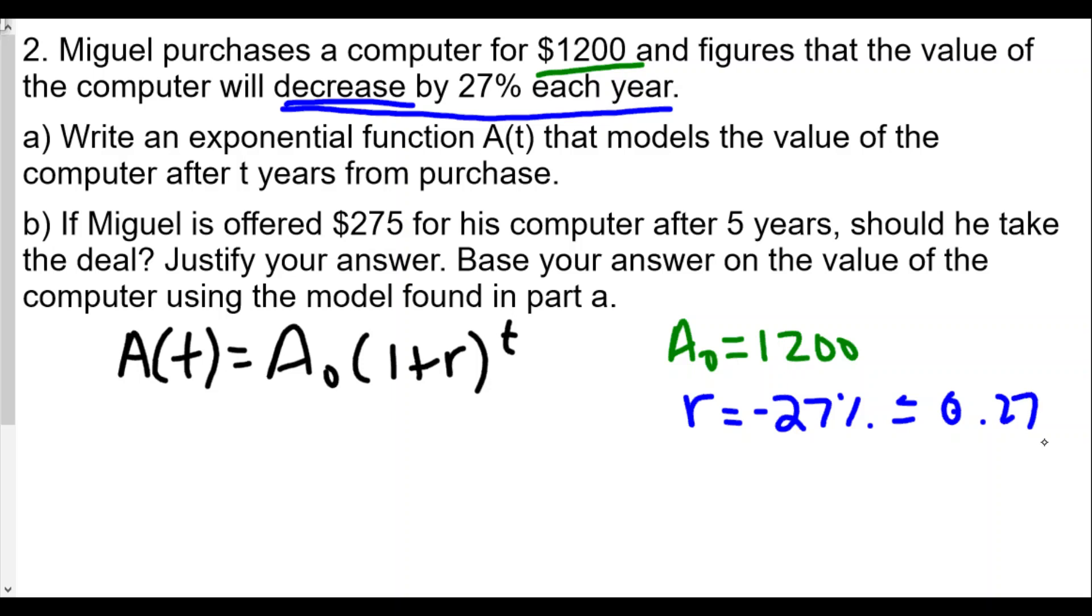We plug this back into our formula: A(t) = 1200 times (1 minus 0.27) raised to the t power. This will be part a, the formula we're going to use to figure out the value of Miguel's computer after t years from purchasing it.